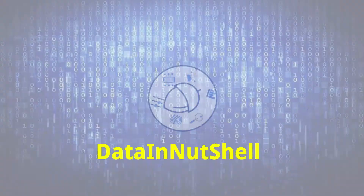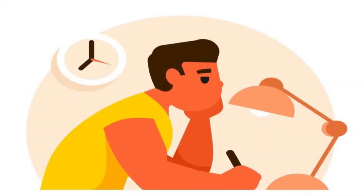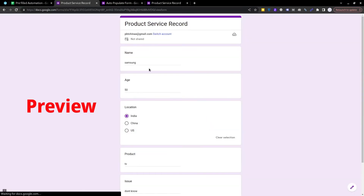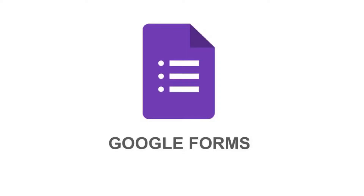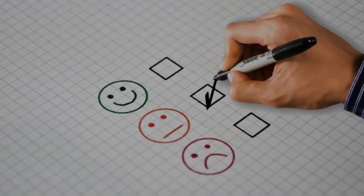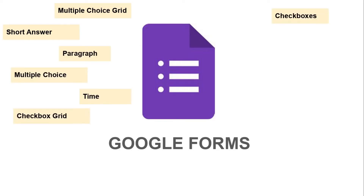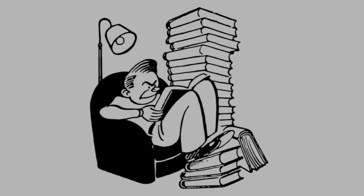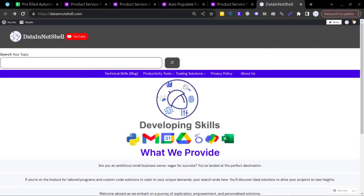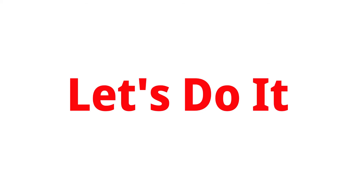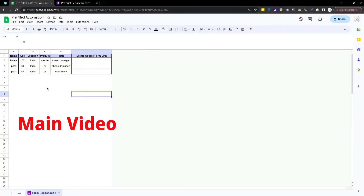Hello friends, welcome back to Data in Nutshell. Today we are going to understand how to get a pre-filled Google Form for the entries present in a Google Sheet. Google Form is a free web-based survey tool and there are 11 types of questions you can set in a Google Form. If you want to learn more, you can also visit www.datainnutshell.com.